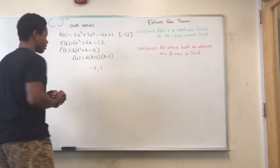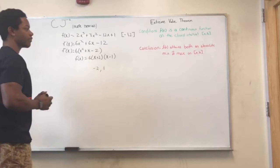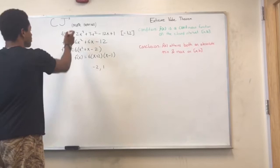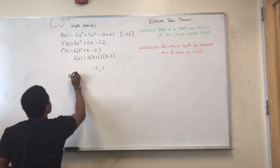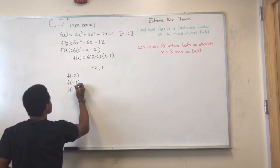Now we must plug in negative 2, 1, negative 1, and 2 to see where we can find the absolute min and max. So we'll plug those numbers into the original function. We have F of negative 2, F of negative 1, F of 1, and F of 2.